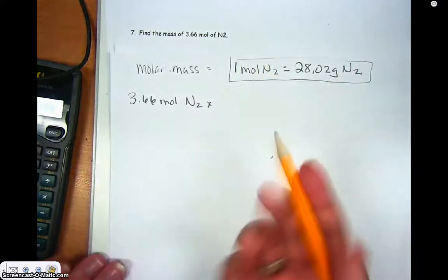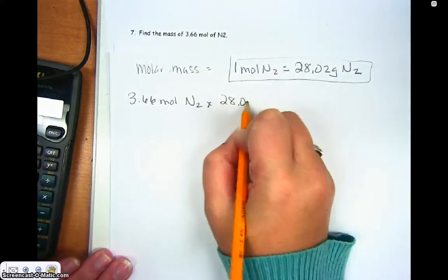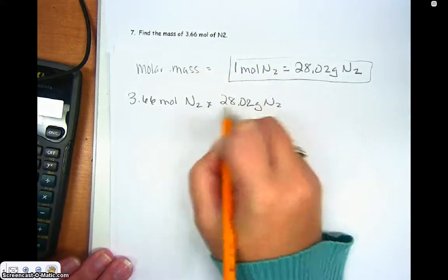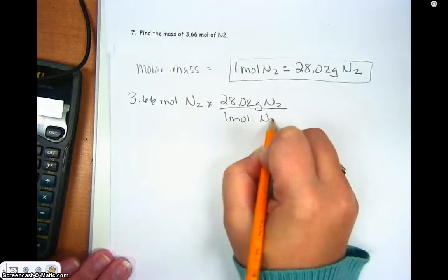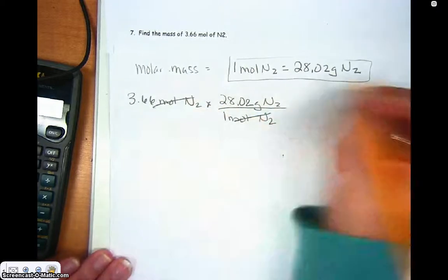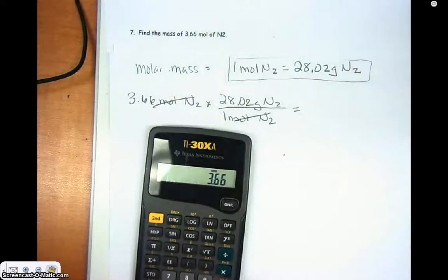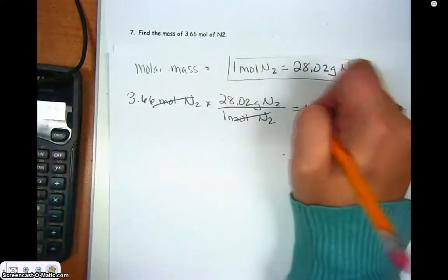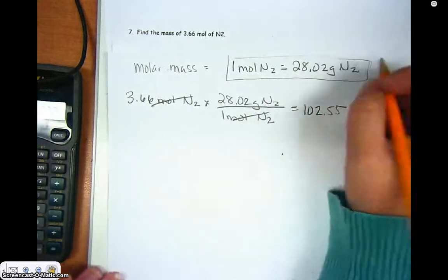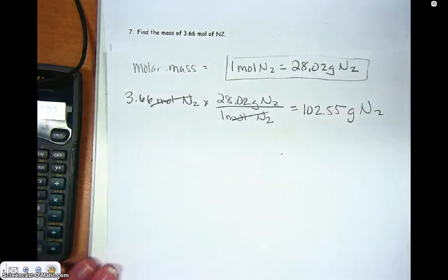So what do I want to go on top? Well, I'm trying to find grams. So I'm going to put the grams on top. And I'm trying to get rid of the moles. So I put my one mole on the bottom. And this cancels. And so I'm going to say that 3.66 times 28.02 is going to be 102.55. And that is how many grams of N2 I have in that substance.